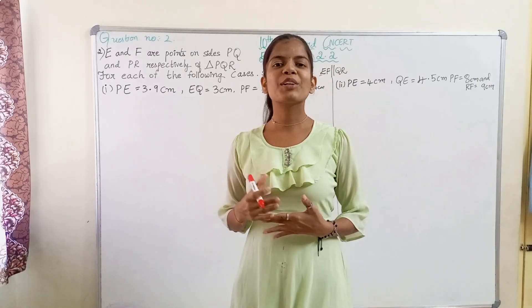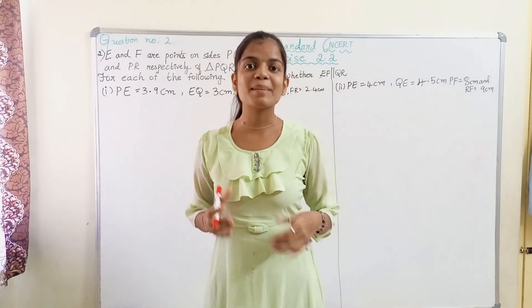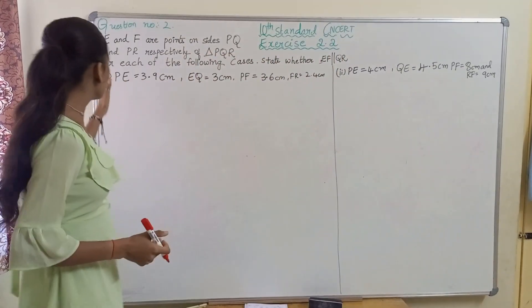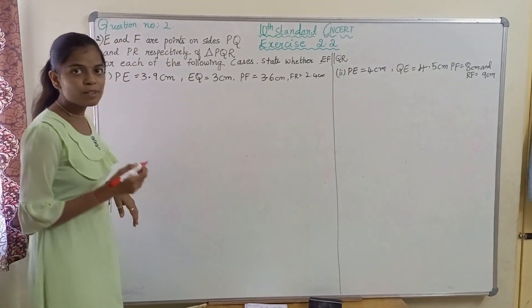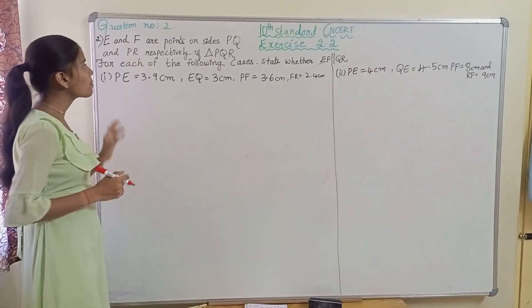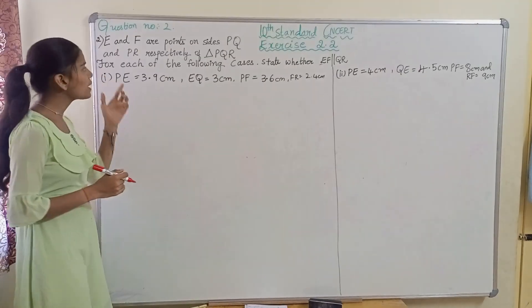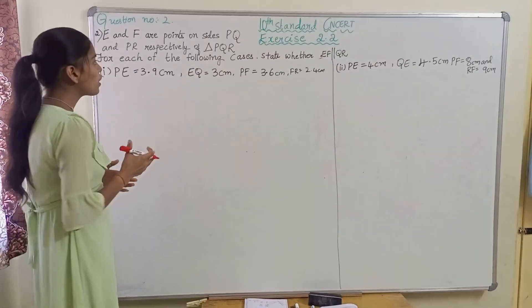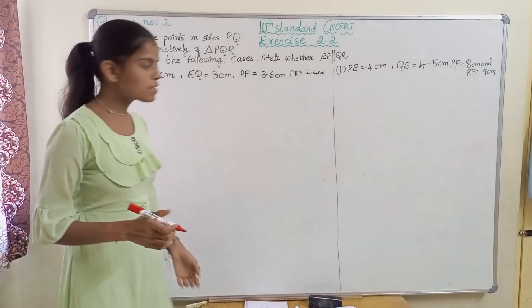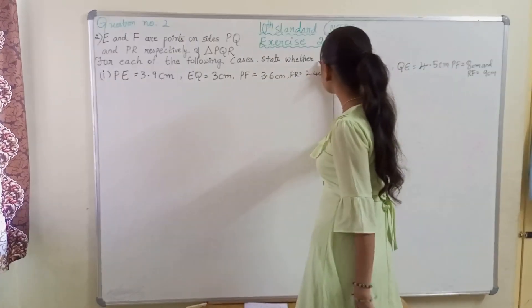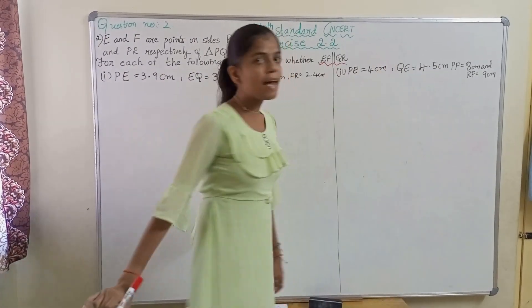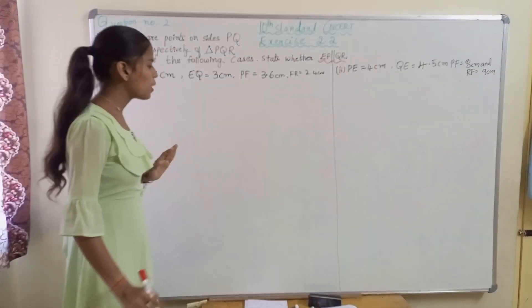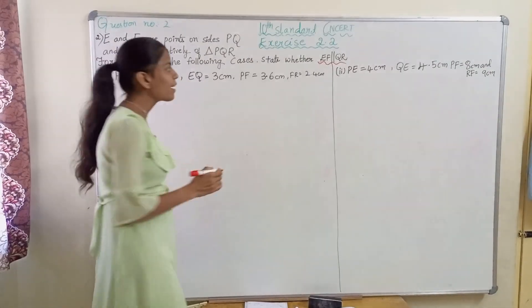Hello everyone. Today we are going to start Class 10 NCERT Mathematics Exercise 2.2, second question. E and F are the points — the question number 2 is: E and F are the points on sides PQ and PR respectively of triangle PQR. For each of the following cases, state whether EF is parallel to QR. We have to prove that EF is parallel to QR in each case. So to understand this question properly, let us draw a triangle first.